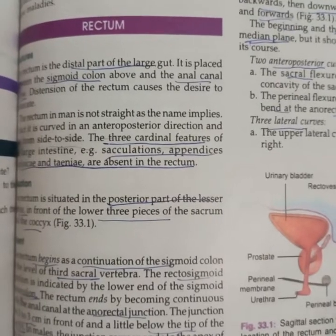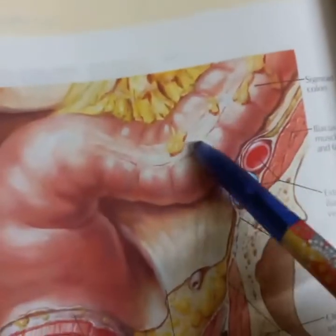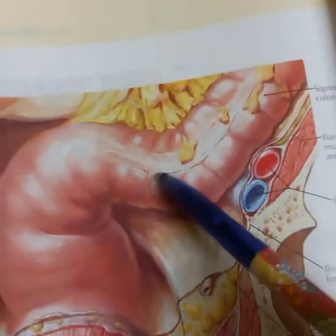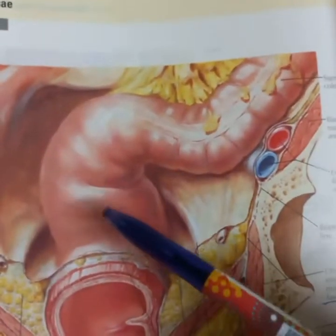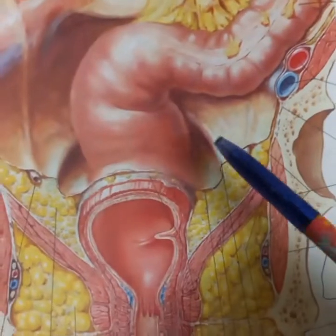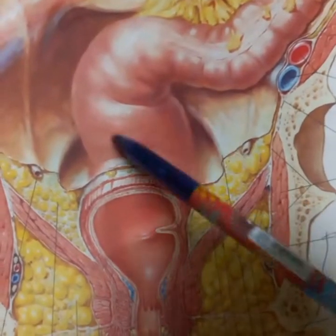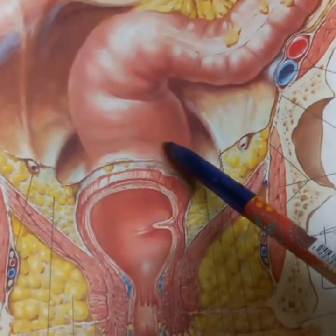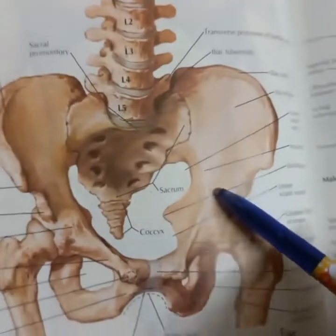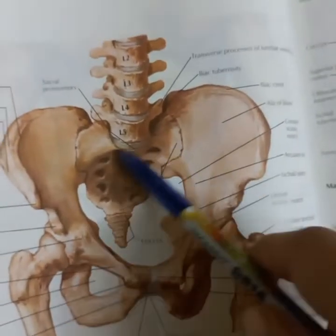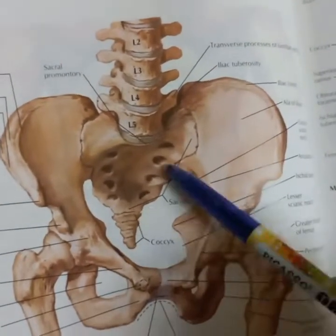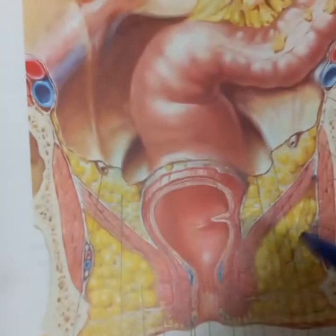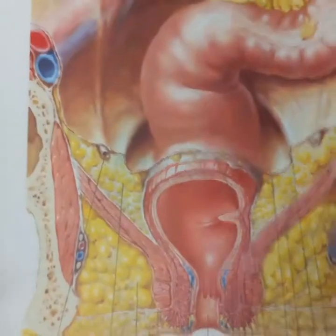The cardinal features of large intestine — sacculation, haustration, and taenia coli — are absent in the rectum. Rectum is situated in the posterior part of the lesser pelvis, which is a space located between the pelvic inlet and outlet, also known as the true pelvis.